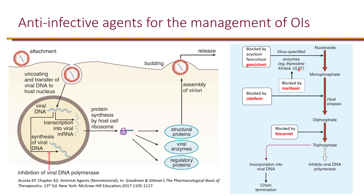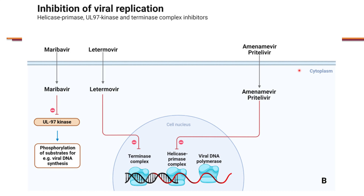Maribovir blocks UL97, which the virus requires for its replication process. Importantly, UL97 is also required for ganciclovir to work — it activates ganciclovir via phosphorylation. Therefore, these two drugs should not be used in combination, because maribovir will prevent ganciclovir from being activated. In terms of mechanism comparison: maribovir blocks UL97, which is needed for phosphorylation of nucleotides required for DNA synthesis, thereby interrupting DNA synthesis. Letermovir enters the nucleus and inhibits the terminase complex, which is needed for DNA replication. Some other agents listed are not available on the market and can be ignored.